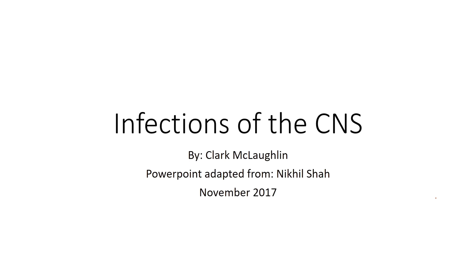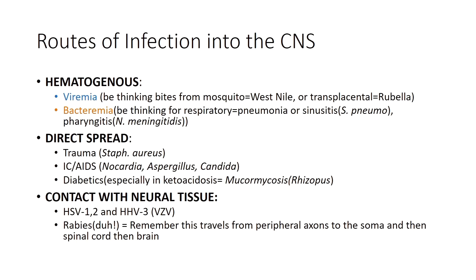Now let's get on to some microbiology. It's important to understand the ways that you can get infections into the central nervous system. Our CNS is a kind of locked-up, hidden place — our immune cells don't really like to go into nerve tissue very much, except for glial cells. Adaptive cells like lymphocytes usually don't hang out there; they stay in the associated lymph nodes draining from the CNS.